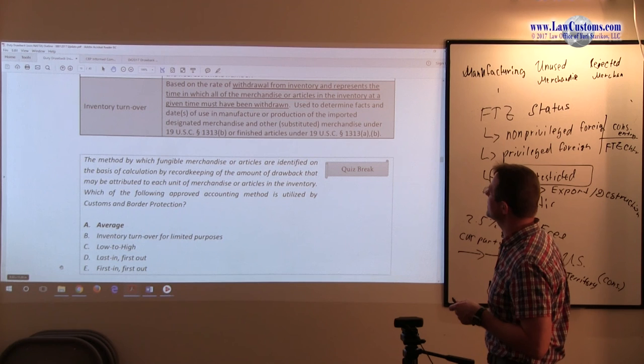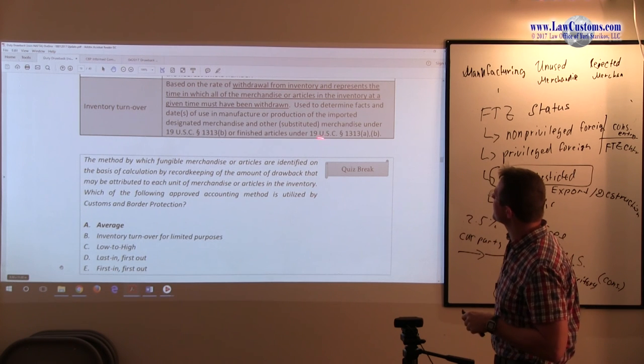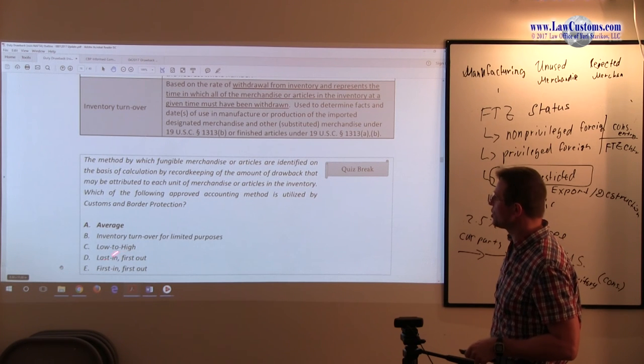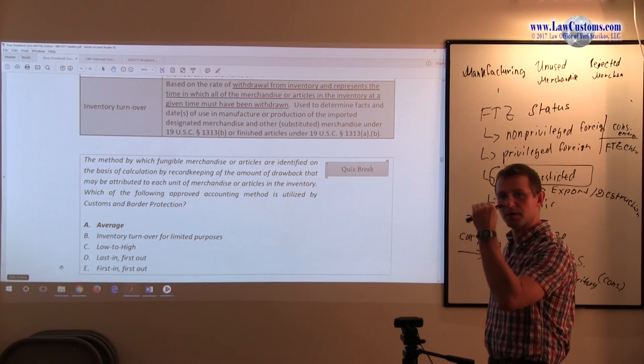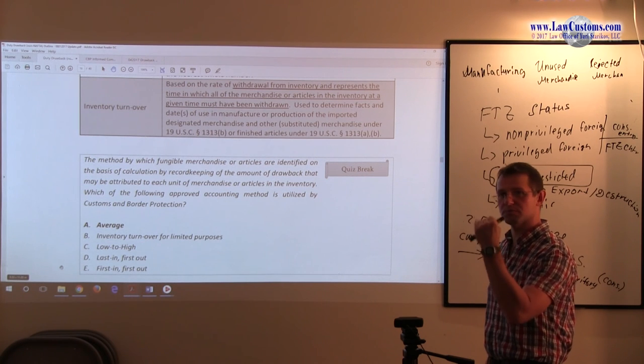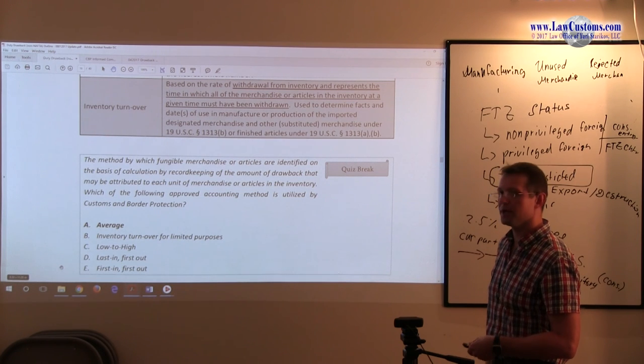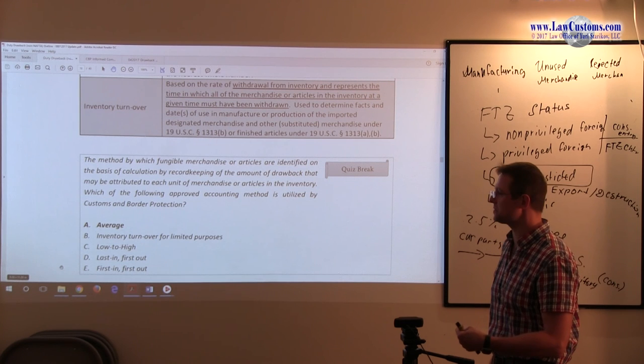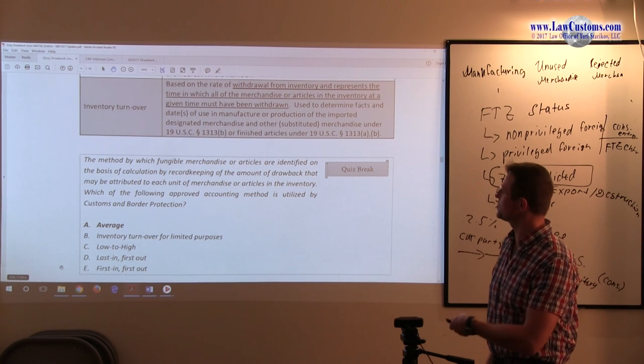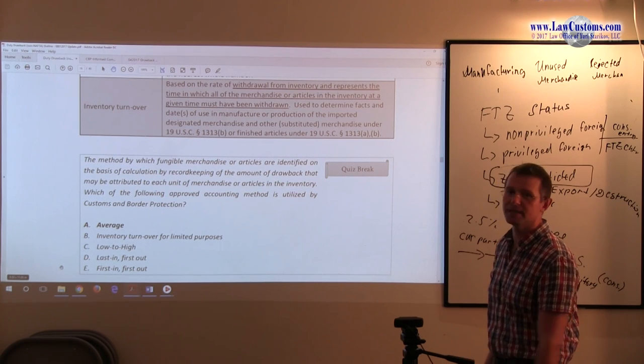Inventory turnover is not attribution to each unit - it's looking at inventory of all merchandise for a particular time period. Low-to-high is focused on withdrawals during a certain period based on the volume. LIFO is the newest item in inventory being withdrawn, and FIFO is the oldest item being withdrawn. Since you have proportional attribution, A is the correct answer choice.